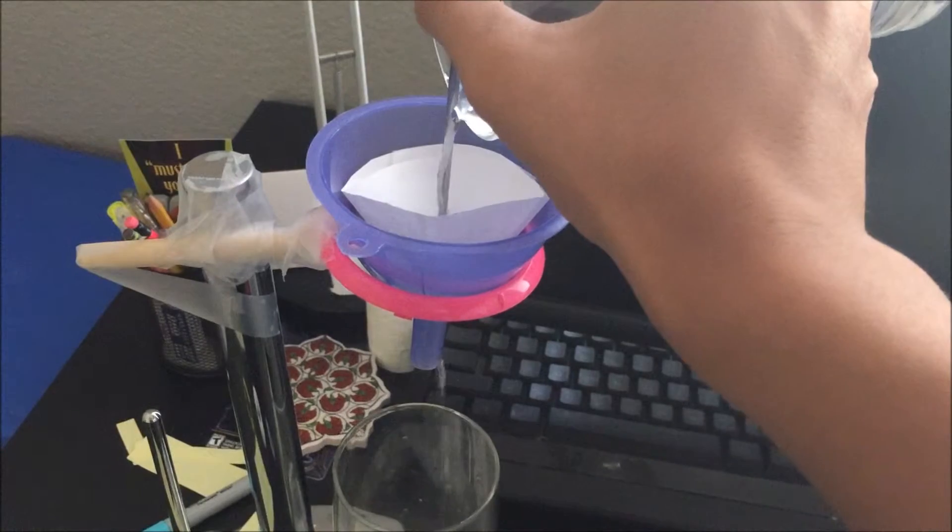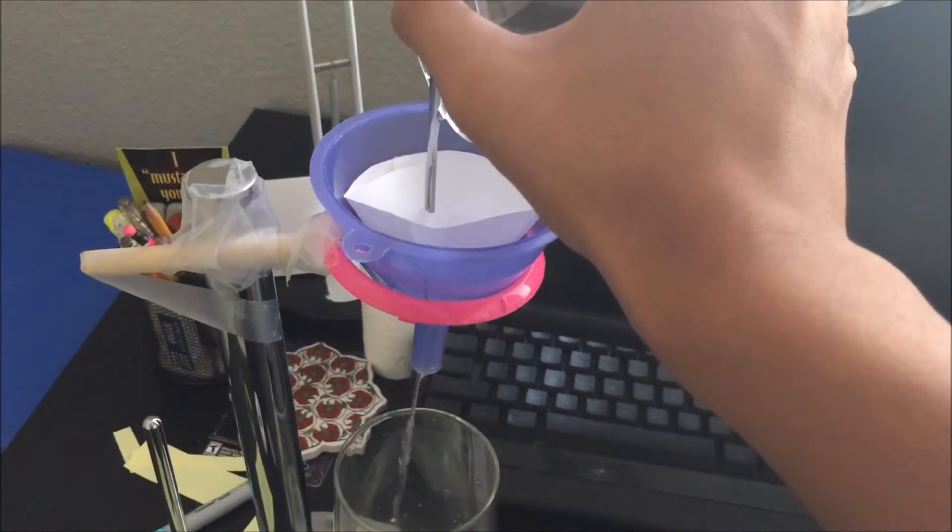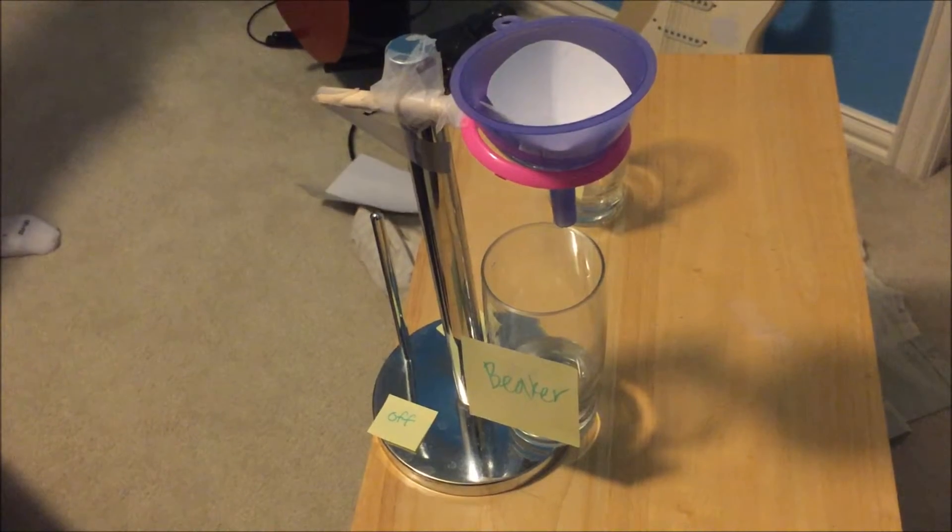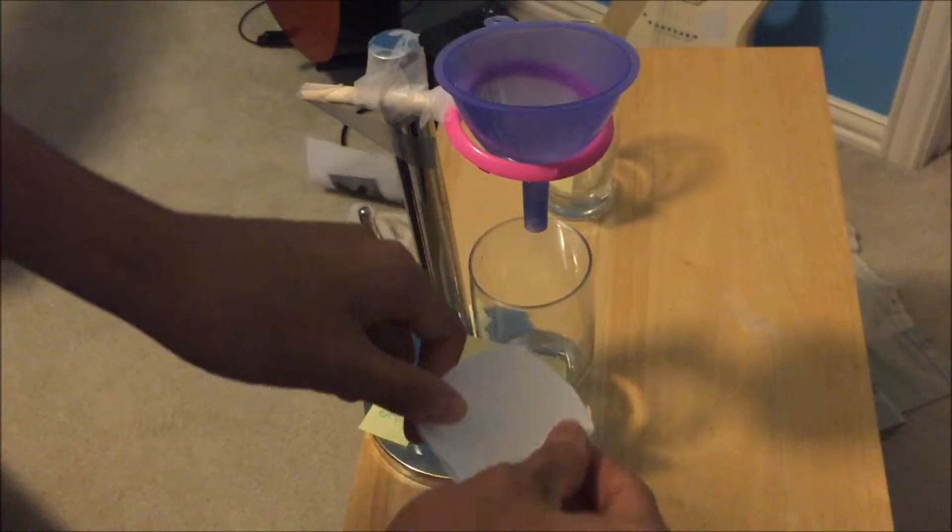Wet the filter paper, then place the stirring rod on top of the beaker so that it serves as a guide for the solution as you pour it into the funnel. Once all of the solution has been poured through the funnel, remove the filter paper and allow it to dry.